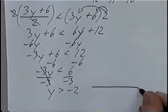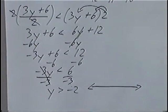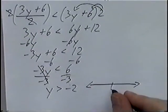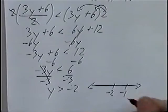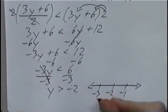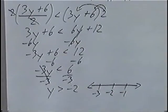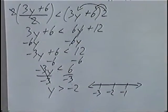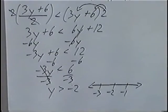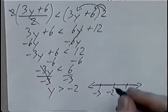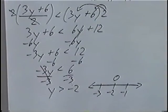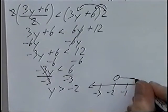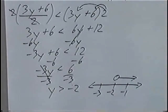For the graph, negative 2 goes in the middle of the number line, with negative 1 to the right and negative 3 to the left. We have open and closed circles. This one is greater than — not equal to — so it's an open circle at negative 2. Since y is greater than negative 2, the line goes to the right.